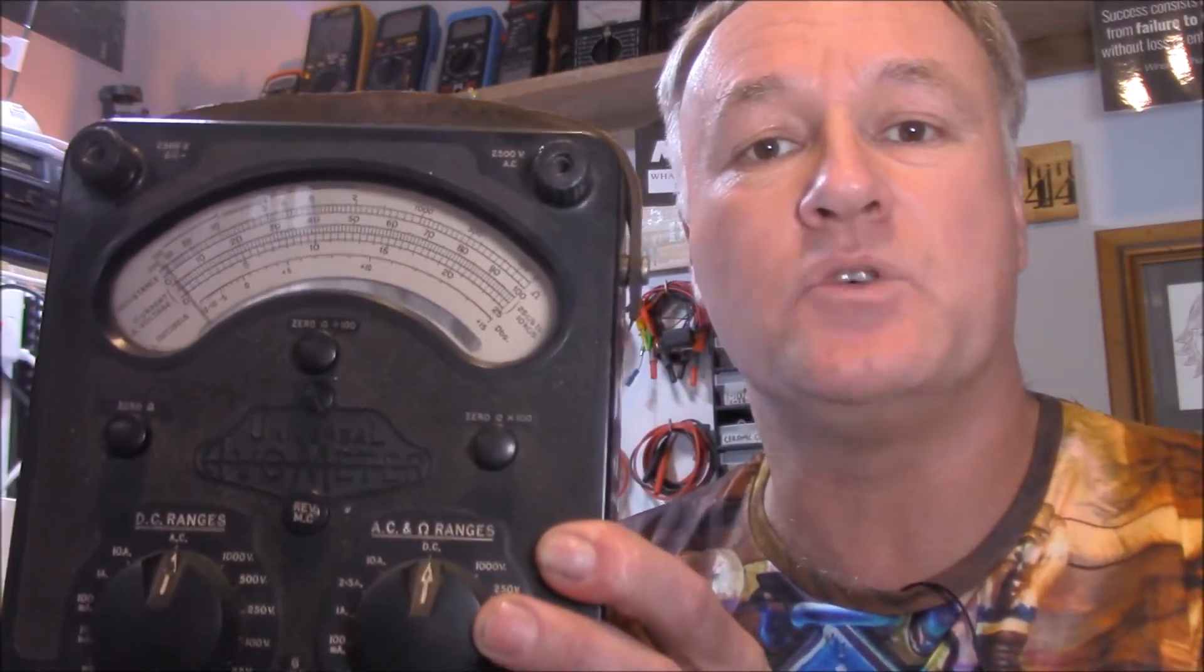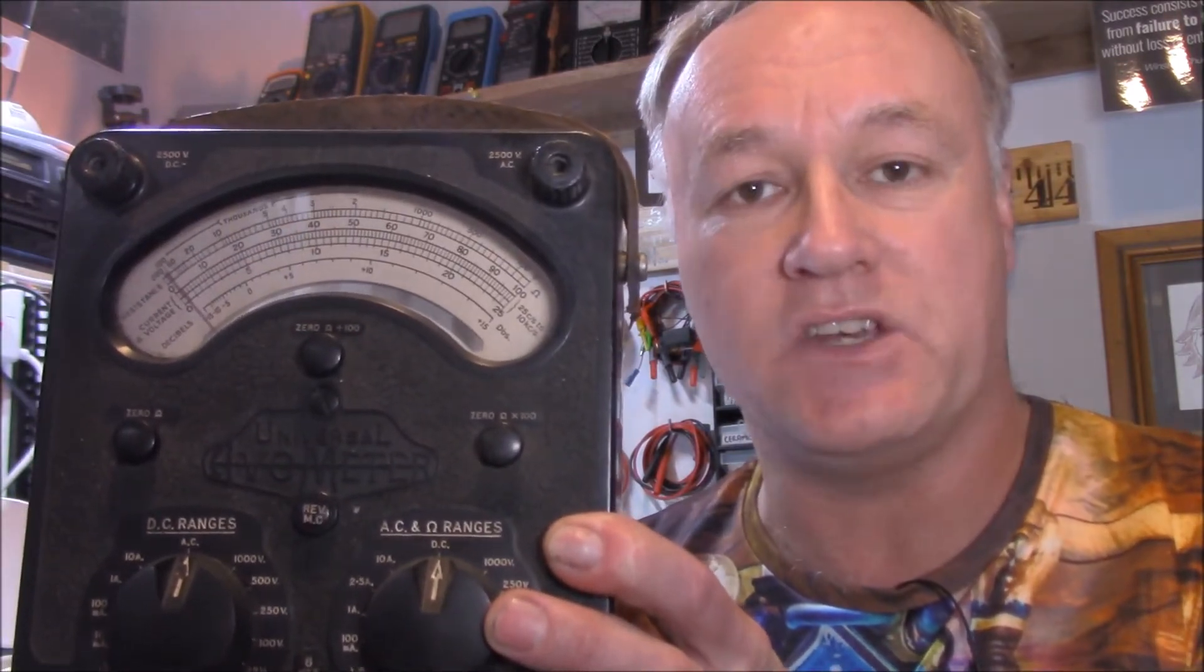Last time, we did a bit of a trip down memory lane. Remember, Donald McCady back in 1923 came up with his AVO meter. That's right, this little bad boy would change the lives of technicians everywhere.